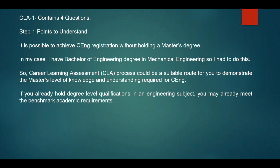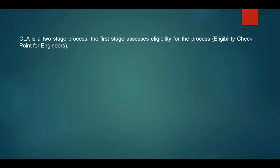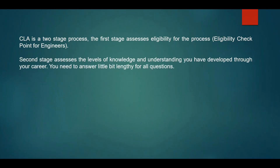If you already hold a degree-level qualification in an engineering subject, you may already meet the benchmark academic requirement for IMechE. CLA is a two-stage process. The first stage is an eligibility check — before you apply for Chartered Engineer, IMechE has to confirm you are eligible. CLA1, the Career Learning Assessment One, is the eligibility checkpoint for all engineers.